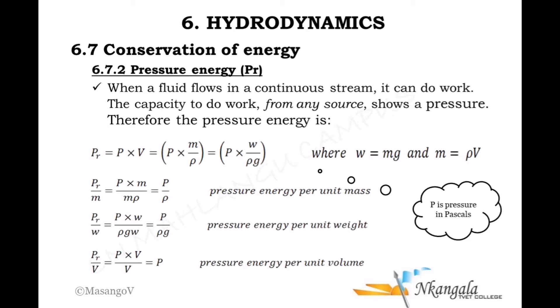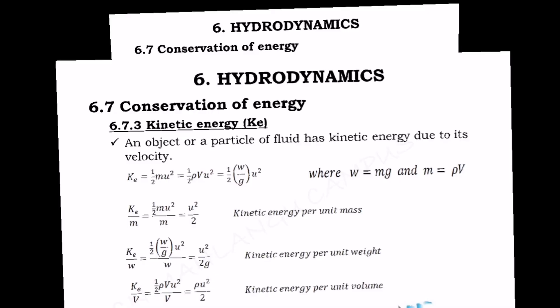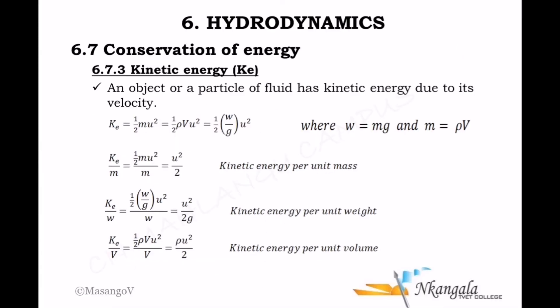Since volume is mass over density, and mass is mg, we can replace those to get a variety of equations for calculating pressure energy. Similarly, pressure energy can be calculated per unit mass, per unit weight, and per unit volume.